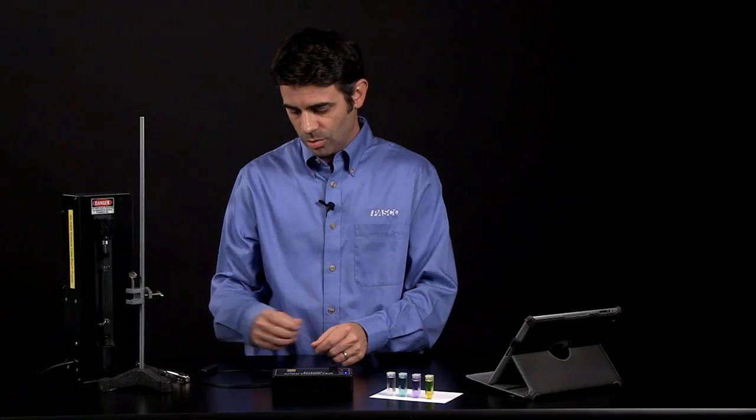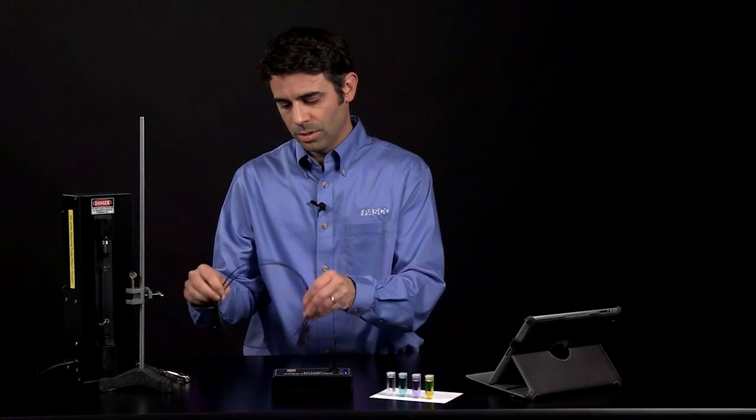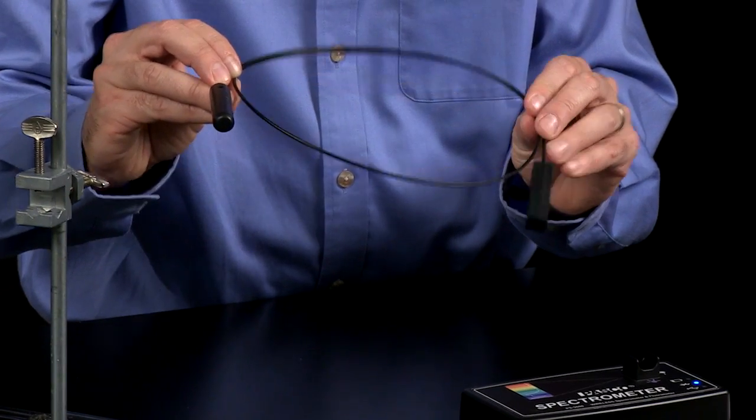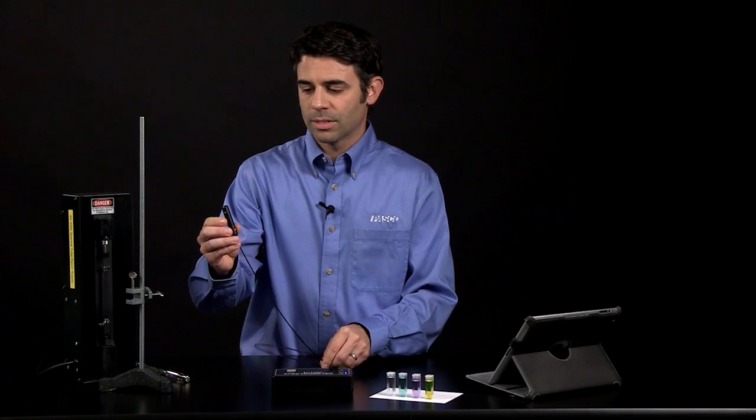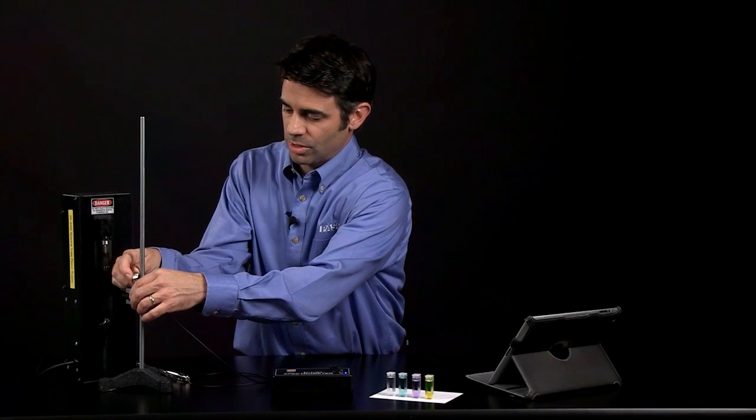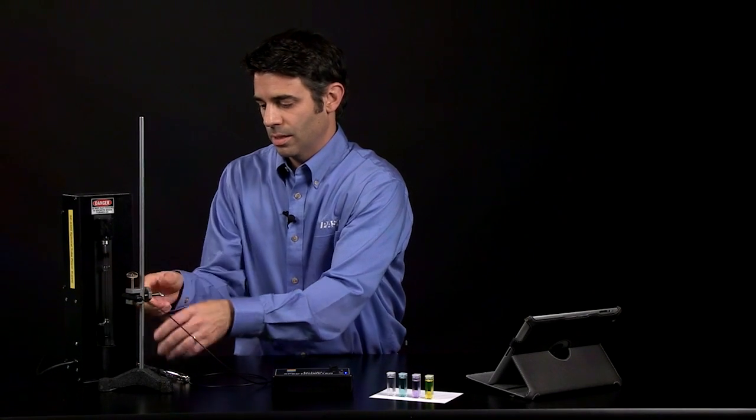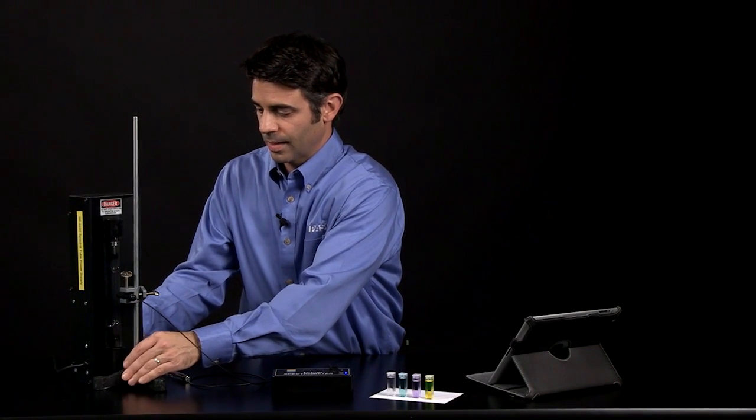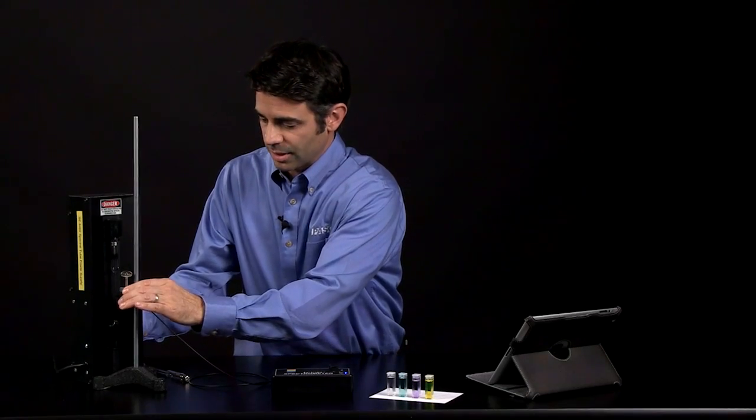To analyze lights, we're going to use the optional fiber optic accessory. One end of the fiber optic accessory, you're going to point at a light source. In this case, I'm going to use some gas emission discharge tubes, and I'm going to use a clamp to hold it steady.